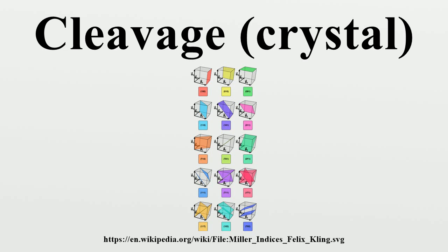Calcite has rhombohedral cleavage. Prismatic cleavage occurs when there are two cleavage planes in a crystal. Spodumene exhibits prismatic cleavage. Dodecahedral cleavage occurs when there are six cleavage planes in a crystal. Sphalerite has dodecahedral cleavage.